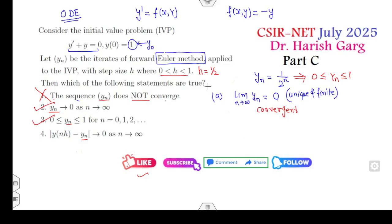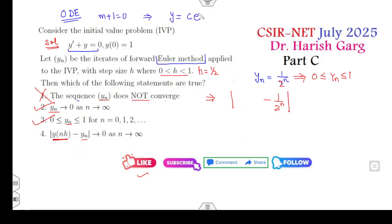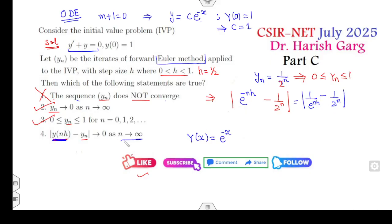For option 4, we compare y_n (the Euler approximation) to y(x_n), the exact solution of the IVP. Solving dy/dx = −y with y(0)=1 using the auxiliary equation m+1=0 gives y(x) = e^{−x}. So y_n = (1/2)^n and y(x_n) = e^{−nh/2} = e^{−n/2}. Both go to 0 as n→∞, so their difference also goes to 0. Therefore options 2, 3, and 4 are all correct answers.